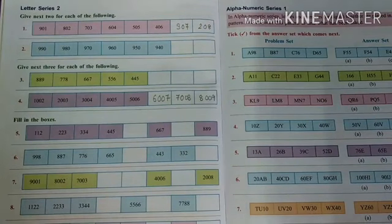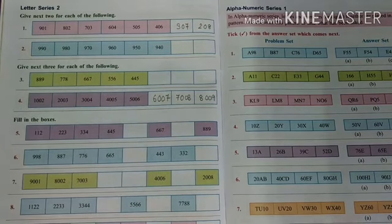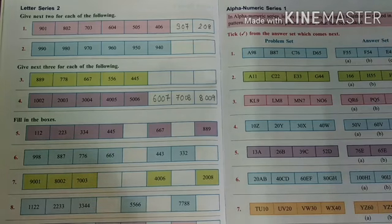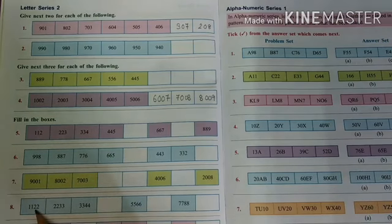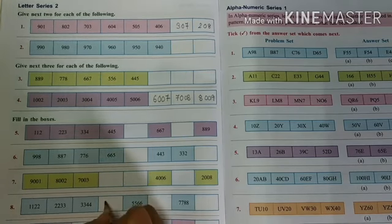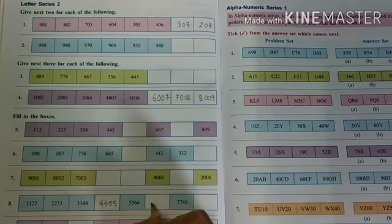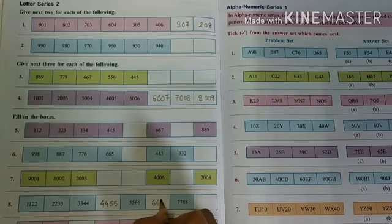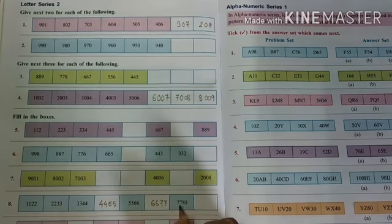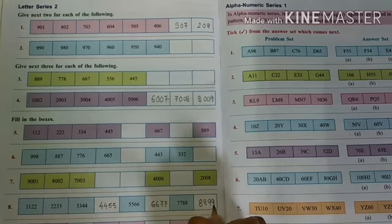Now fill in the boxes. Number 8: double 1, double 2; then double 2, double 3. This is the continuation of the series with repeated numbers. Double 2, double 3, double 3, double 4; double 4, double 5; double 5, double 6; then double 6, double 7; then 7, 7, 8, 8; then 8, 8, double 9.